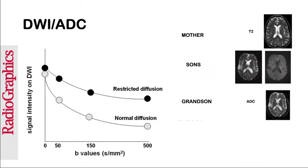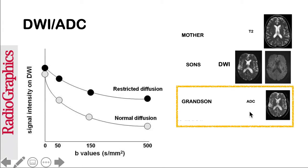What are ADC images? T2 is the mother, DWI is the son, and ADC is the grandson. This means we cannot have an ADC without the DWI. We actually need two DWI with different B values: a lower B value and a higher B value, for example, B0 and B1000.